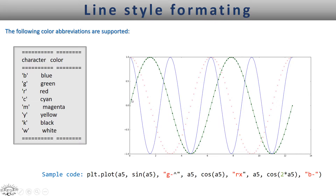The example shown here — the first one is gotten using a format string where the green specifies the color, the dash ensures that there is a continuous line plot, and then the symbol specifies the marker of the plot. In the second one, the 'r' specifies the color which is red.